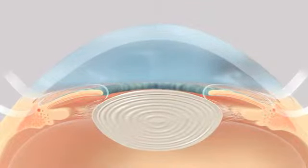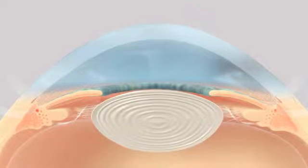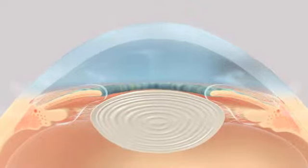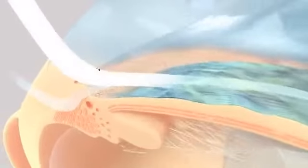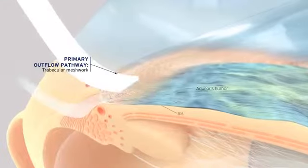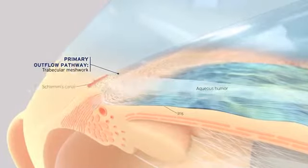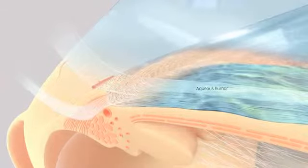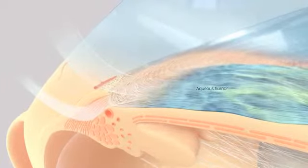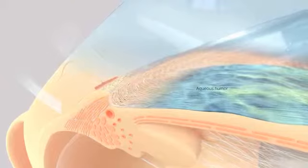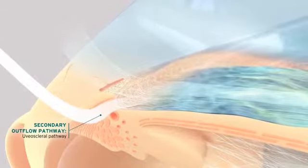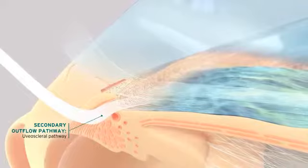Intraocular pressure, or IOP, is regulated by the rate of aqueous humor production and its outflow through two pathways. The primary outflow pathway consists of the trabecular meshwork and Schlemm's canal. The majority of aqueous humor exits the eye through this pathway. The remaining aqueous humor exits through a secondary pathway called the uveoscleral pathway.